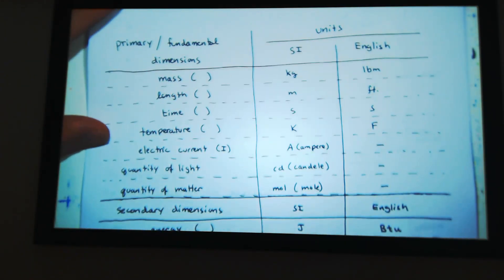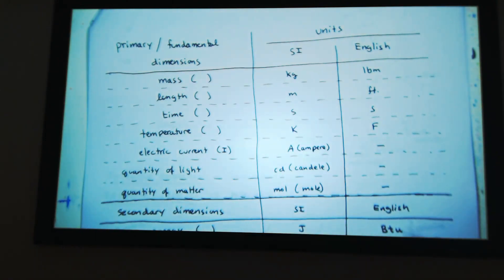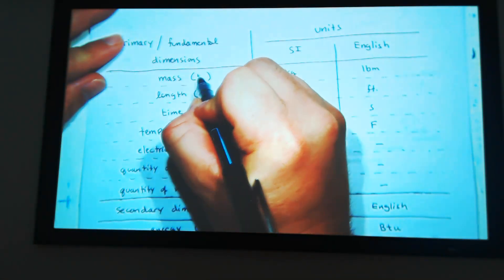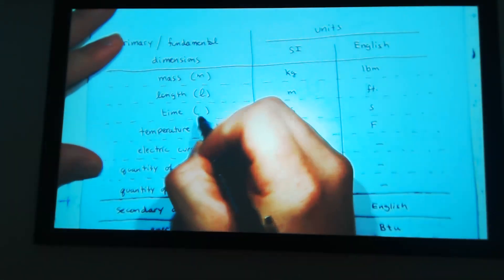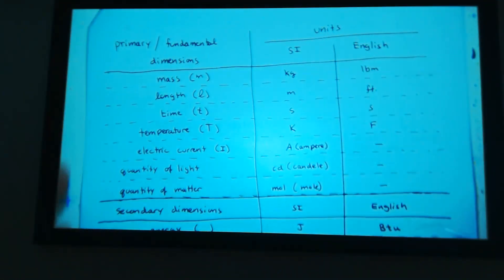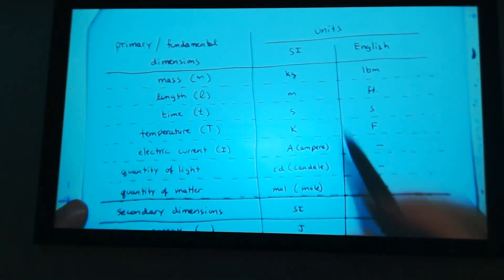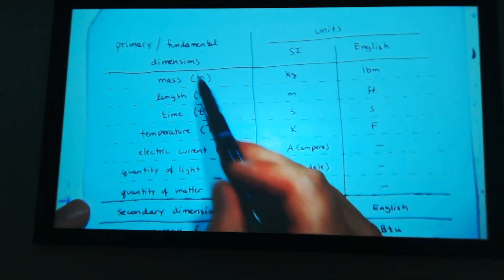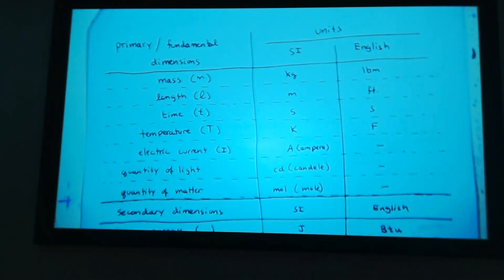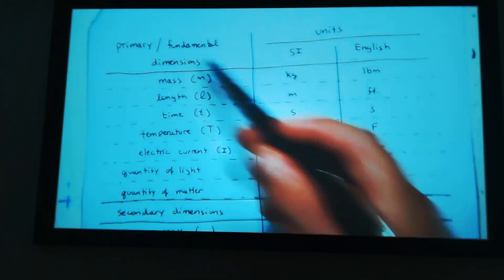So what are dimensions? I can go through this quick. There's primary dimensions: mass M, length L, time T, temperature T. And I can go through, right? And then there's units associated with each one of these primary dimensions. Then there's secondary dimensions which are built up on primary.